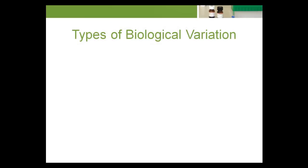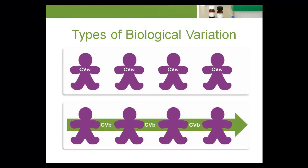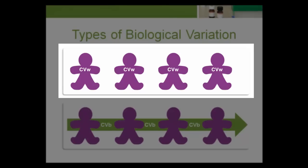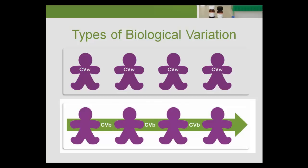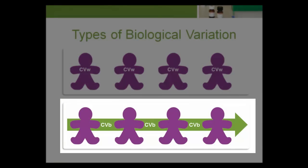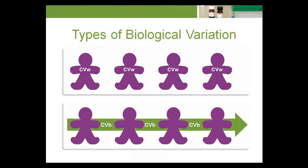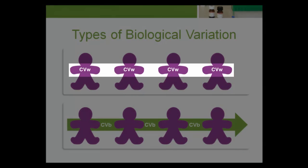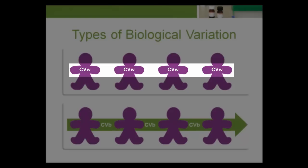Data collected during these experiments can be one of two types of biological variation. Within-subject: the average inherent biological variation around the homeostatic setting point of a group of average individuals. Biological variation is expressed as a coefficient of variation percent, CV percent. Use CVW to express within-subject biological variation. CV is the coefficient of variation, and the W indicates within-subject.